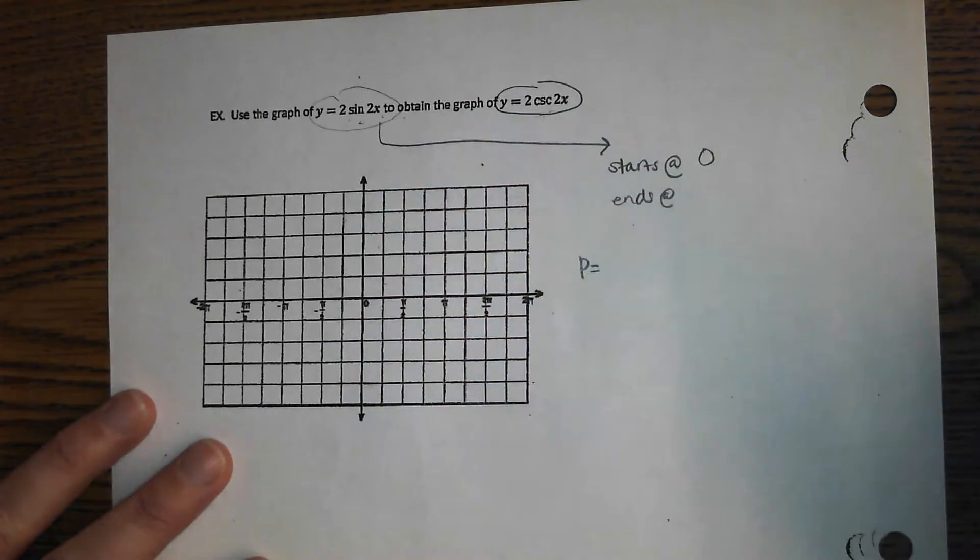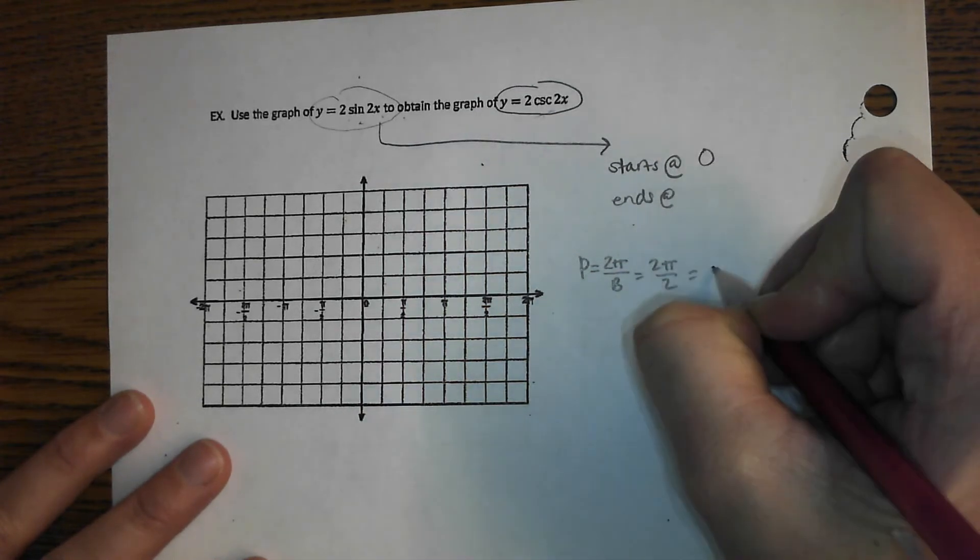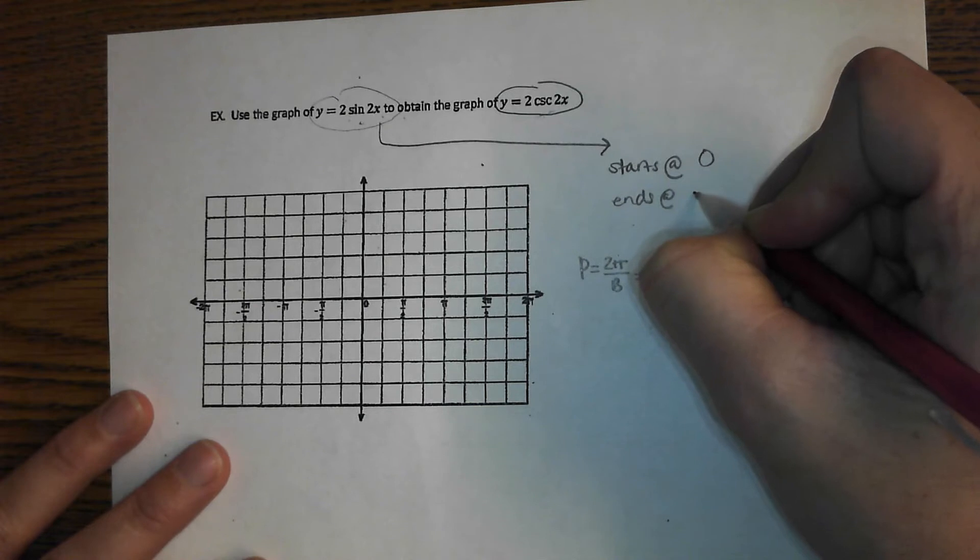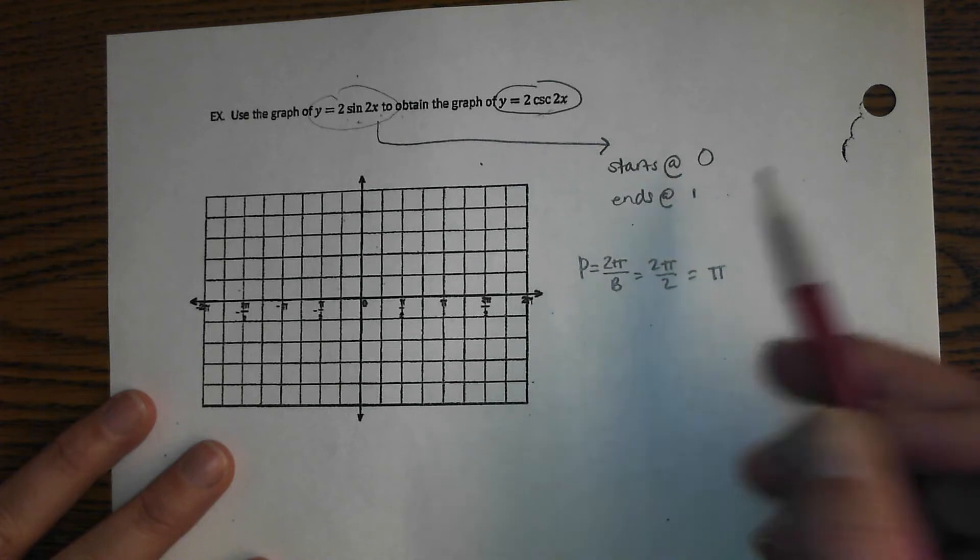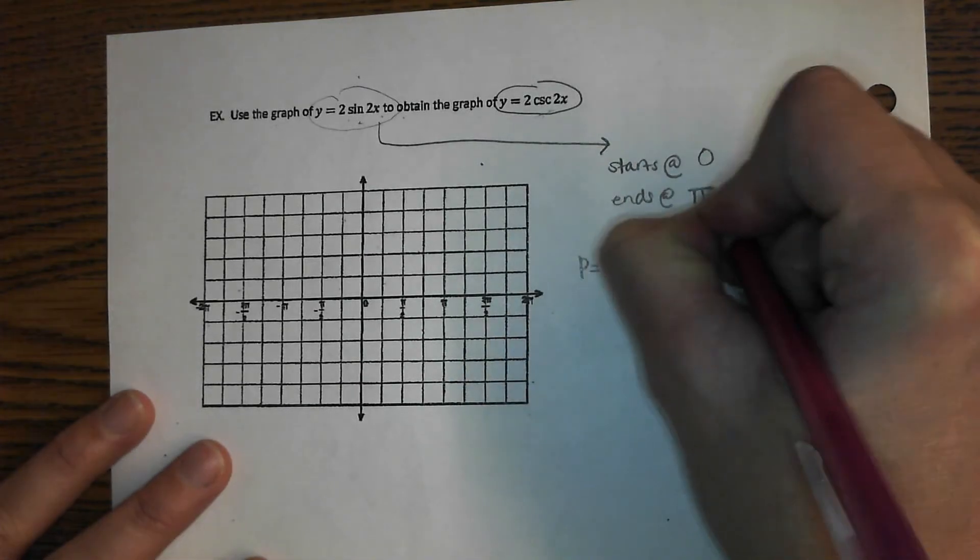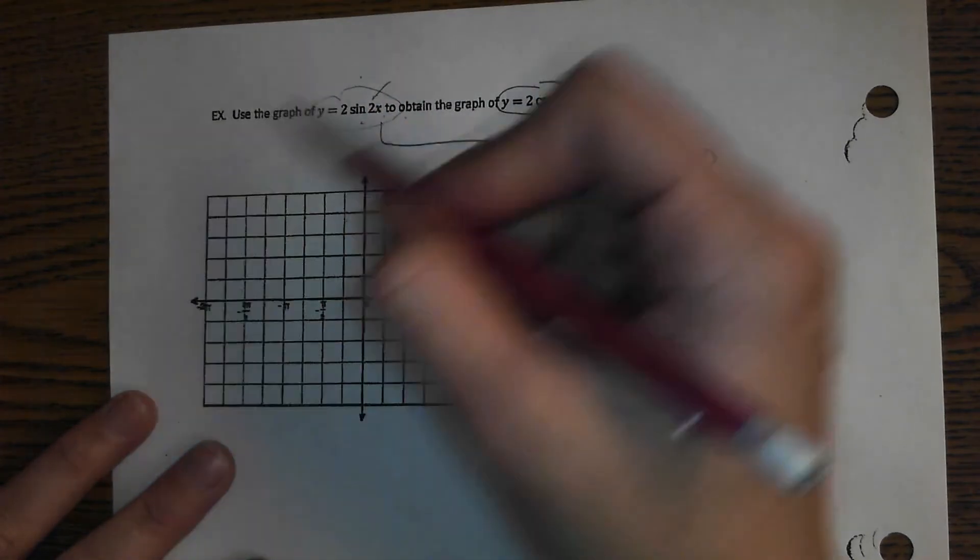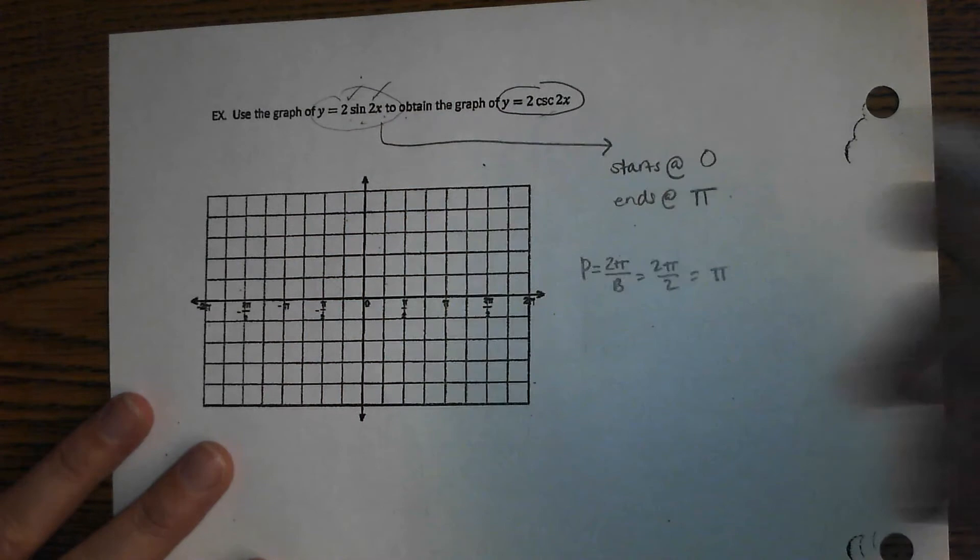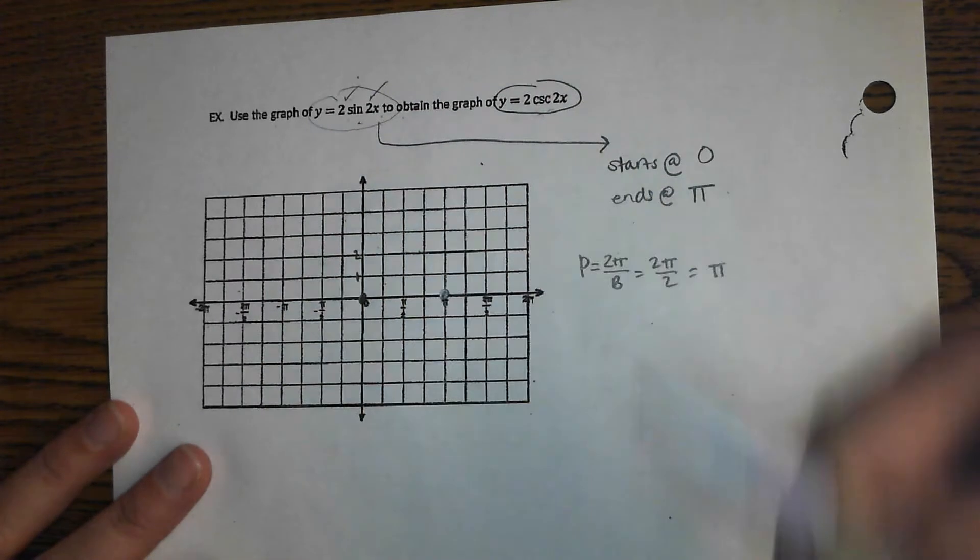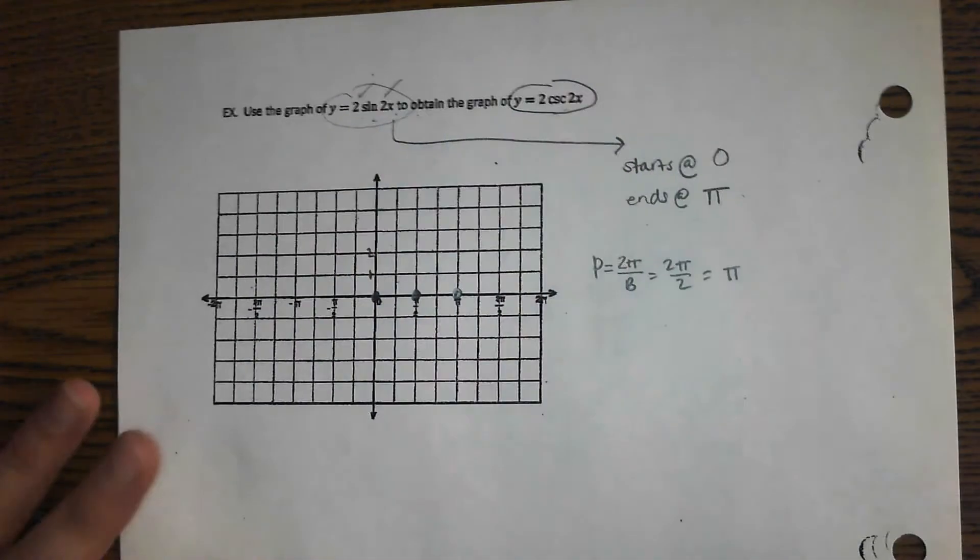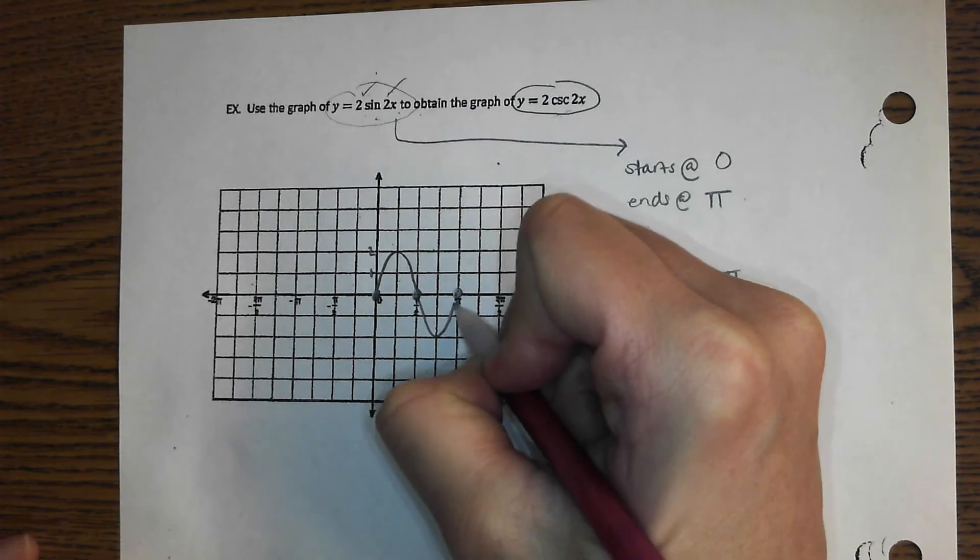No, so it starts at 0 and it's going to end one period later. So the period Mitch is calculated by doing what? 2 pi over B. And B is 2 so that would all be pi so it ends at pi. Nope your period is pi if it starts at 0 it's got to end pi units later at pi. And then the amplitude is just 2 so I'm going to count by 1's. I have to start at 0 end at pi. Sine curves have a midway point and then it's going to go up to 2 back to the midline down to negative 2 back to the midline.